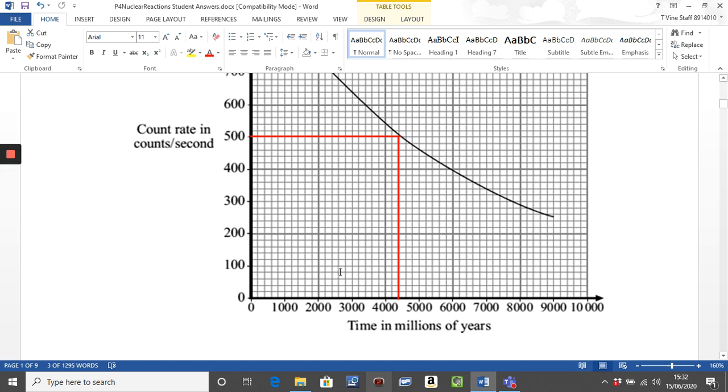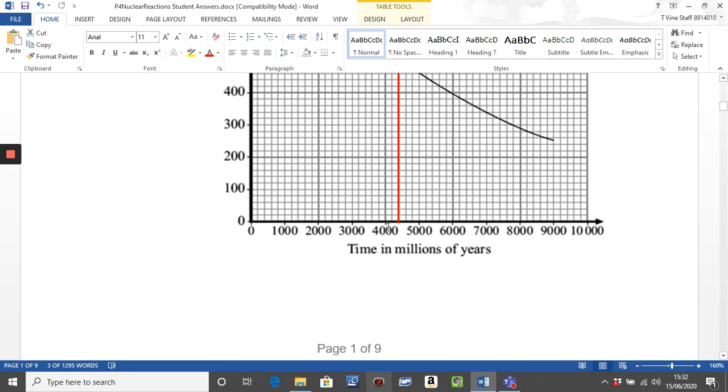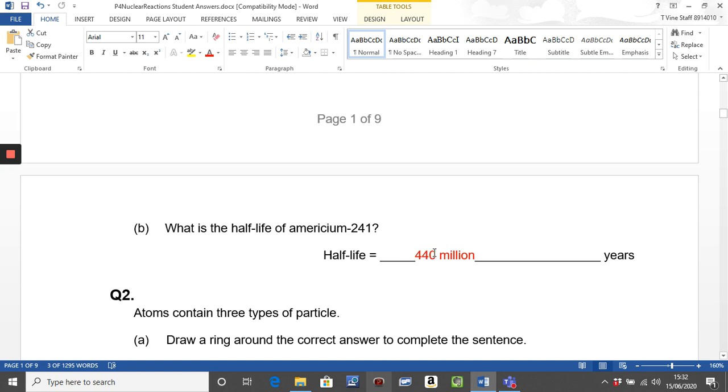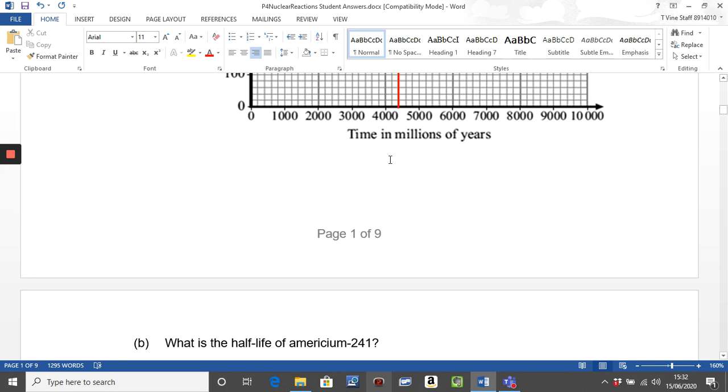Now the examiner wants to see that you've drawn those lines because they can give you marks if you're a little bit out on your timing, as long as it matches your lines. So if we look at our bottom scale here, it is basically between your 4,000 and 5,000. Each of my little squares there is worth 200. So your answer should be 4,400 million years. Now without that million, you haven't given the right answer because you haven't read the time scale correctly.